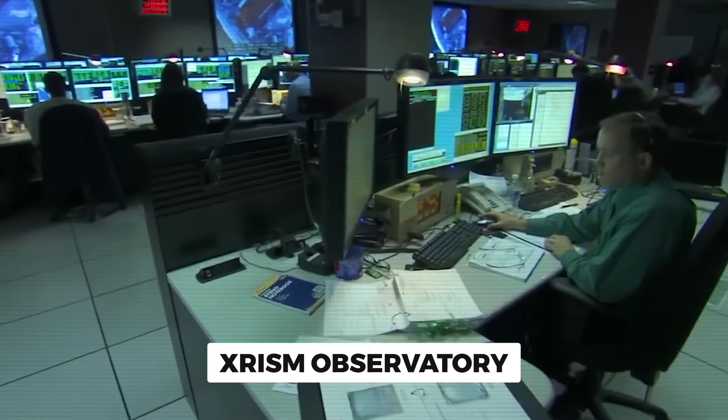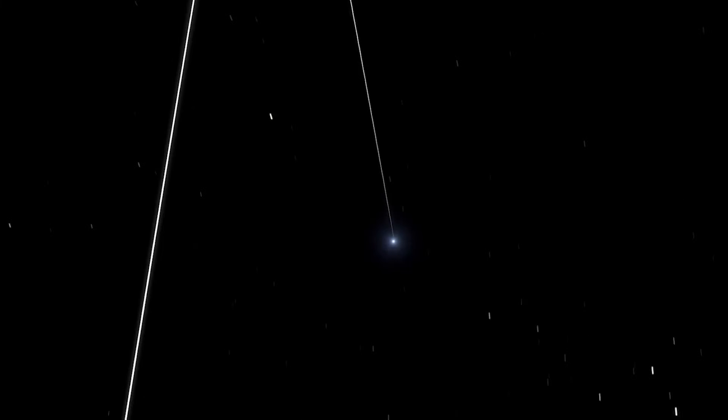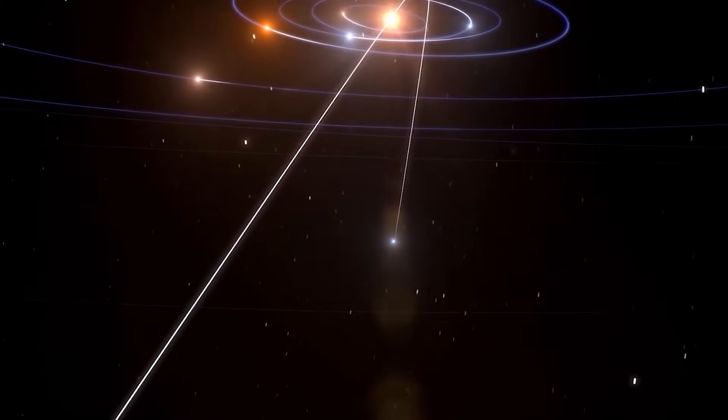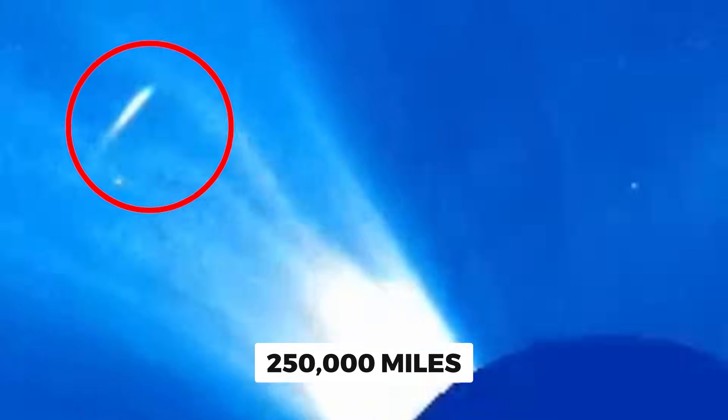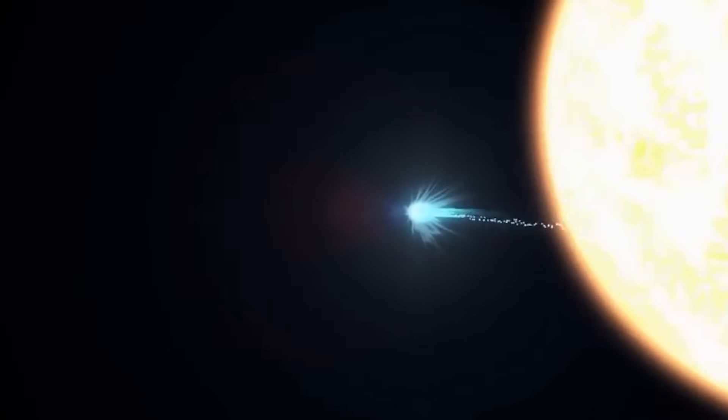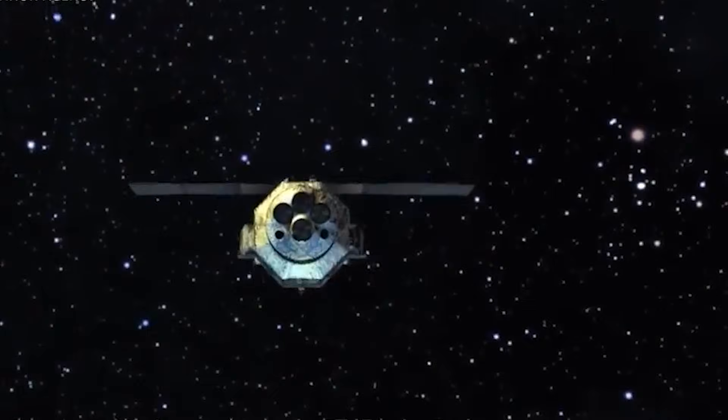Japan's XRISM observatory captured something that's never been seen before - a comet from beyond our solar system glowing with radiation that stretches across 250,000 miles of space. This isn't just unusual, this is a cosmic first. Because while scientists have tried to detect X-rays from interstellar objects before, they've always come up empty.